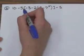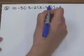Another order of operations problem. We have two grouping symbols: brackets and parentheses.